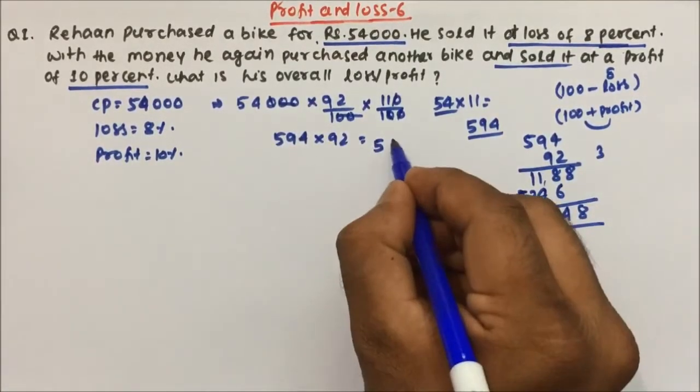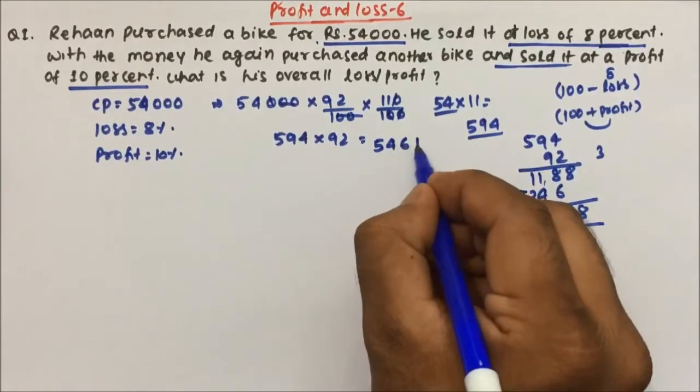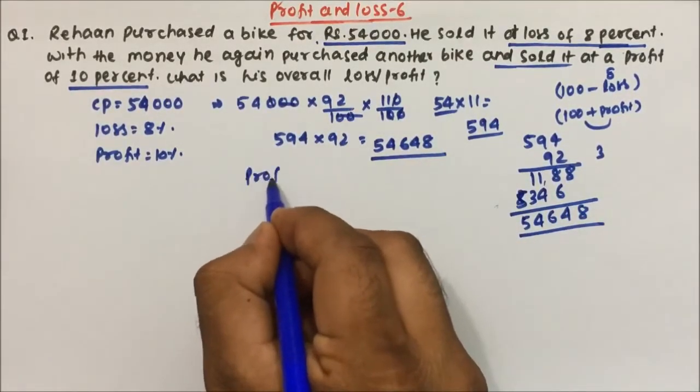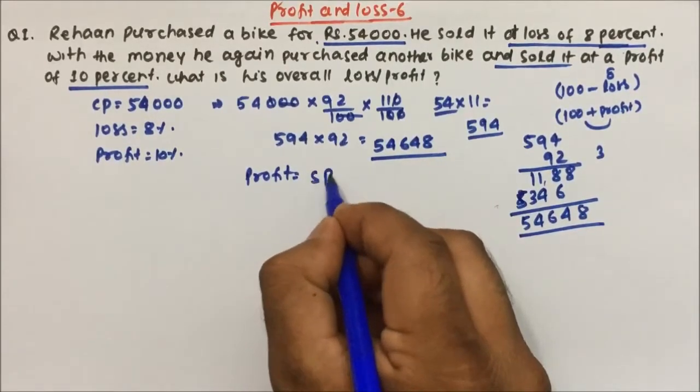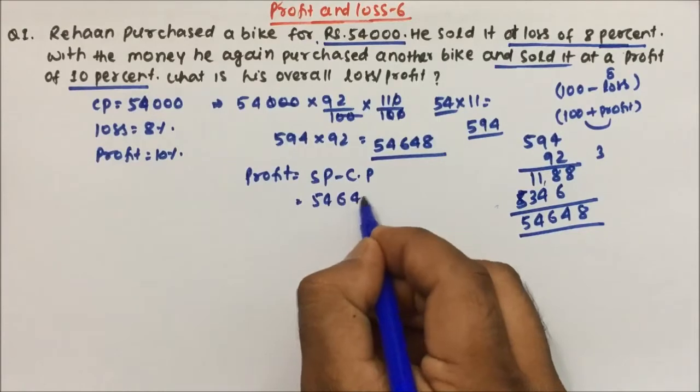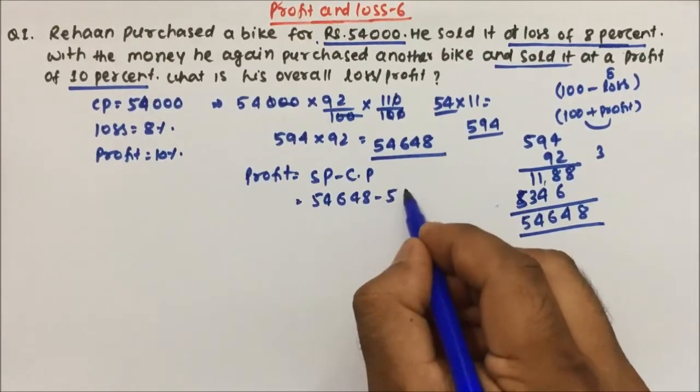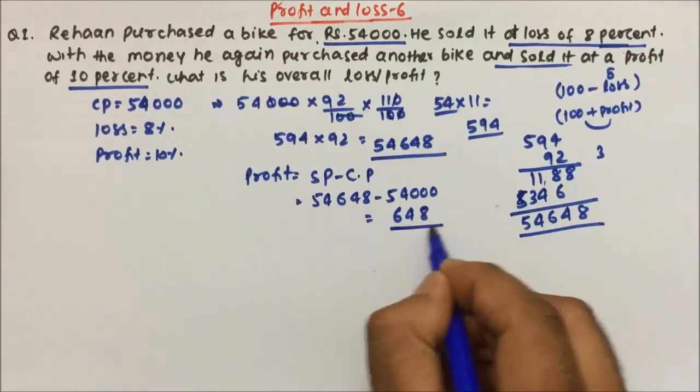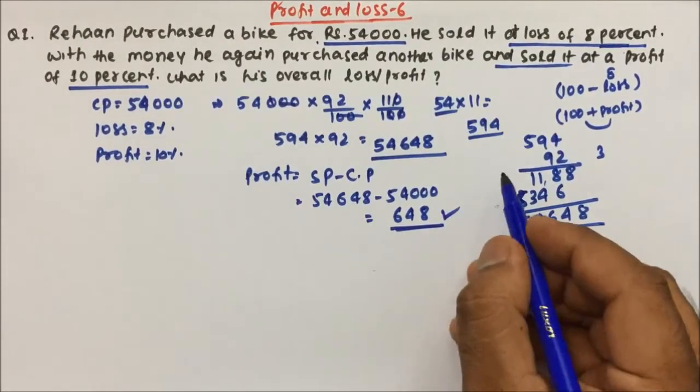Now 8 plus 6 is 14, 4 plus 1 is 5, 5 plus 1 will be 6, 1 is in hand, 3 plus 1 is 4 and 5, 4, 6, 4, 8. That means the person will be finally selling the product in 54,648. So what is the profit? Now the profit will be selling price minus cost price. 54,648 minus 54,000. So the person will be earning 648 rupees.